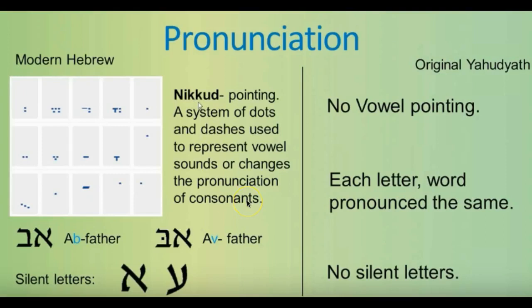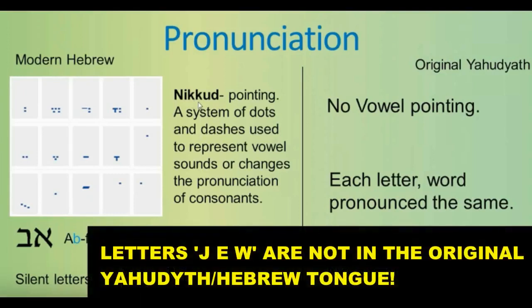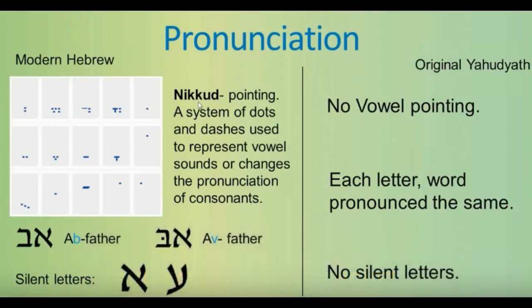The reason they adopted vowel pointing comes from those who call themselves the chosen but are not — the synagogue of Satan — who call themselves Jew, J-E-W, even though none of those letters are in the original Yahudiith language. The reason all this vowel pointing was added to create confusion — because Yahuwah is not the author of confusion — is because it was done by the Masoretic Jewish faction around the 6th through 10th centuries A.D., in order to confuse the language, hide words, and hide the name of our creator Yahuwah.